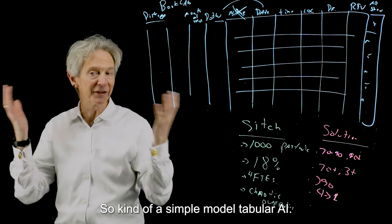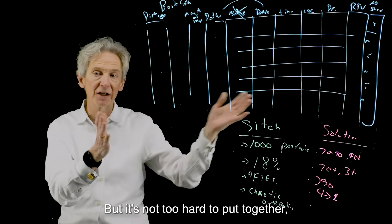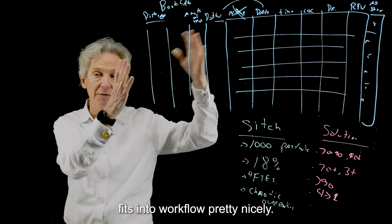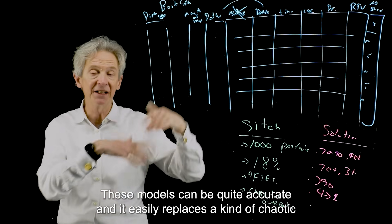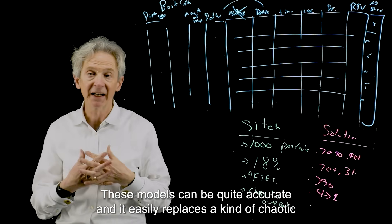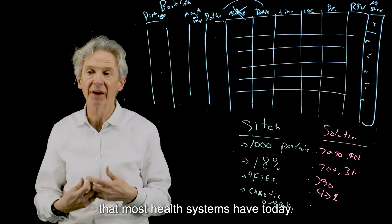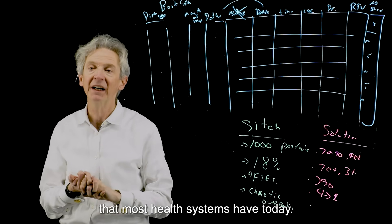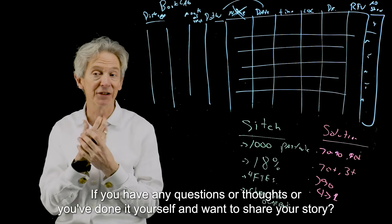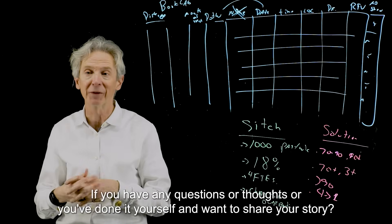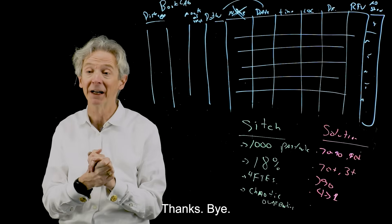So that's it. So kind of a simple model, tabular AI, but it's not too hard to put together, fits into workflow pretty nicely. These models can be quite accurate and it easily replaces a kind of chaotic and somewhat costly workflow that most health systems have today. So I hope that was interesting. If you have any questions or thoughts or you've done it yourself and want to share your story, I'd really appreciate hearing from you in the comments. Thanks. Bye bye.